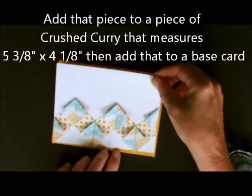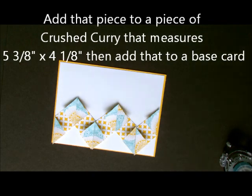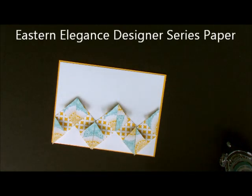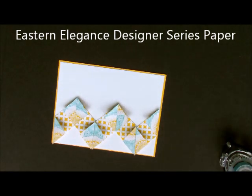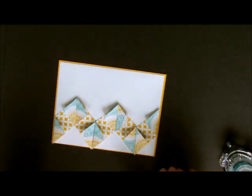Now what I would do is I would go back and I would reassemble. I would add this to my Crushed Curries cardstock. Then what I would do is I would add that to a base card. This pattern right here is coming from a new designer series paper packet called Eastern Elegance. It's absolutely gorgeous. It's in the 2013-2014 Stampin' Up! catalog.